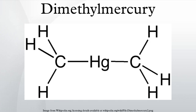Synthesis, structure, reactions: the compound was one of the earliest organometallics reported, reflecting its considerable stability. It is formed by treating sodium amalgam with methyl halides: Hg + 2Na + 2CH₃I → Hg(CH₃)₂ + 2NaI.